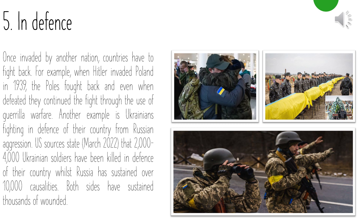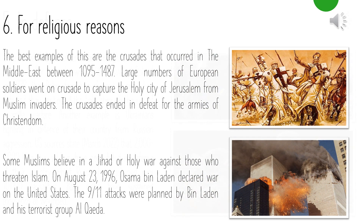US sources estimate that two to four thousand Ukrainian soldiers have been killed in defense of their country, whilst Russia has sustained over ten thousand casualties, with thousands wounded on both sides. Six: for religious reasons or holy war. The best example is the Crusades, which occurred between 1095 and 1487, when large numbers of European Christian soldiers went to capture the holy city of Jerusalem from Muslim invaders. The Crusades ended in defeat. A more modern example: some Muslims believe in jihad, or holy war. On August 23rd 1996, Osama bin Laden declared war on the United States, and the 9/11 attacks were planned by bin Laden and al-Qaeda.